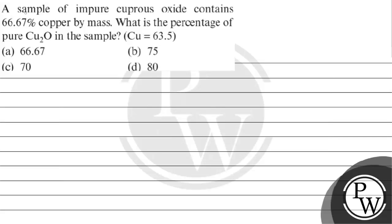Hello, let's read this question. The question says a sample of impure cuprous oxide contains 66.67% of copper by mass. What is the percentage of pure copper oxide in the sample?